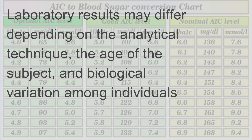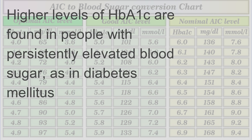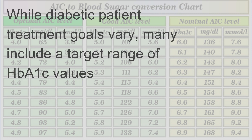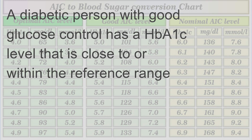Interpretation of results: laboratory results may differ depending on the analytical technique, the age of the subject, and biological variation among individuals. Higher levels of HbA1c are found in people with persistently elevated blood sugar, as in diabetes mellitus. Many diabetic patient treatment goals include a target range of HbA1c values; a diabetic person with good glucose control has an HbA1c level that is close to or within the reference range.